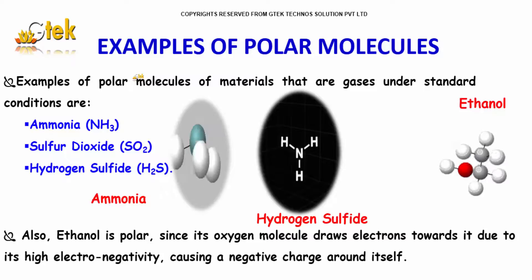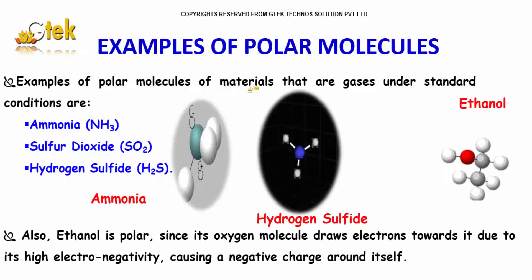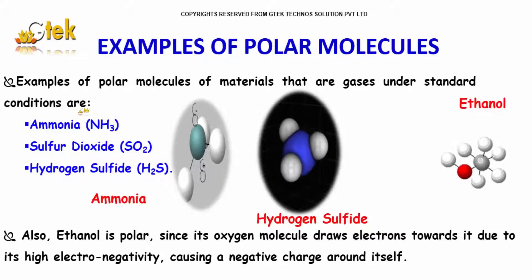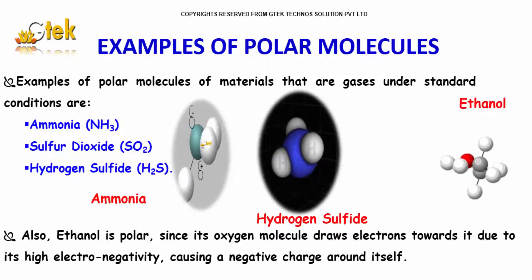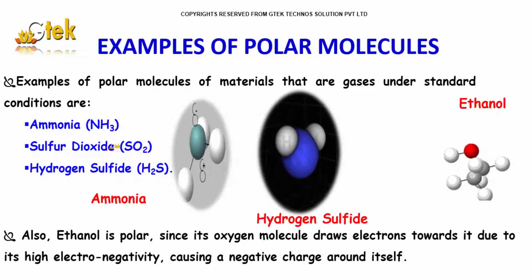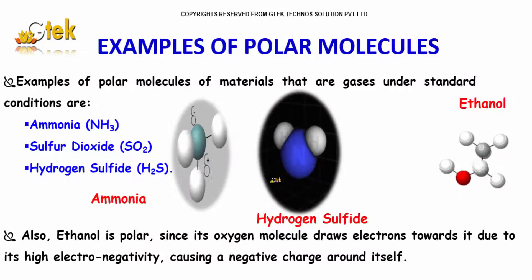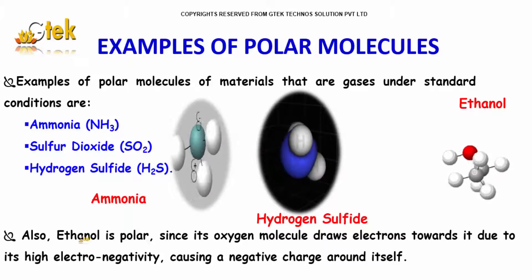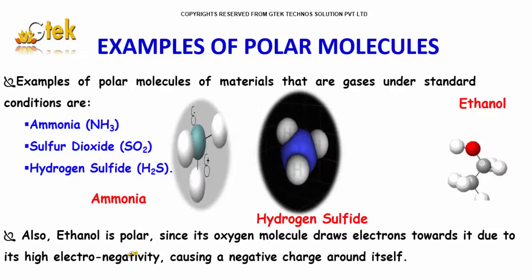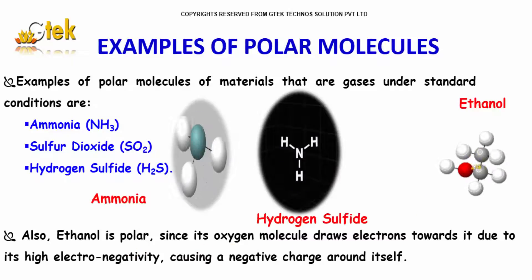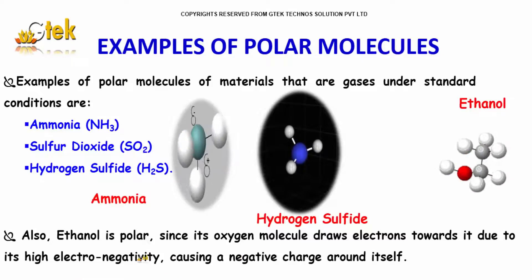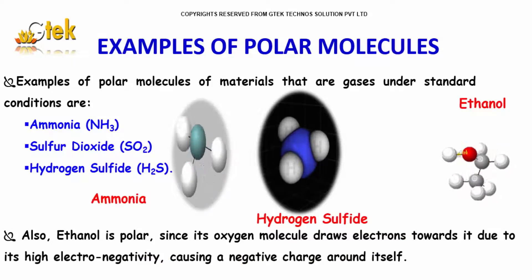Here are examples of polar molecules that are gases under standard conditions: ammonia (NH3), sulfur dioxide, and hydrogen sulfide. Ethanol is also polar, since its oxygen atom draws electrons towards it due to its high electronegativity, causing a negative charge around itself.